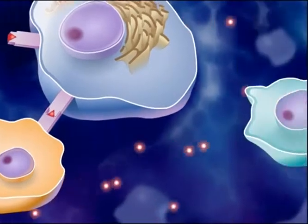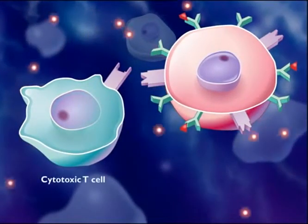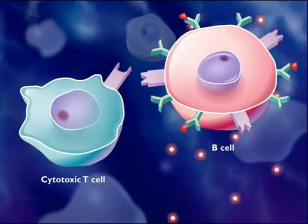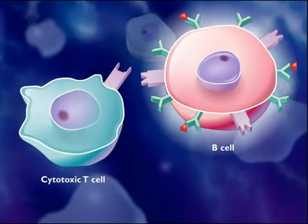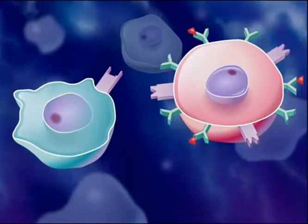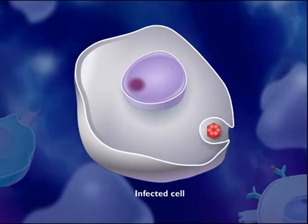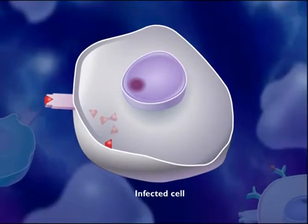Interleukin-2 causes the proliferation of certain cytotoxic T-cells and B-cells. The immune response from this point follows two paths: one using cytotoxic T-cells and one using B-cells. Normal cells of the body that become infected can also digest some of the pathogens and display antigen fragments on their cell surfaces.